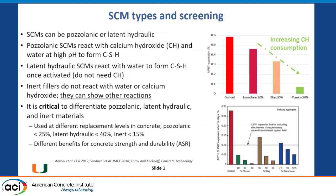Some examples to talk about the link between reactivity and durability: here is a curve which shows that as calcium hydroxide consumption increases, the AMBT expansion reduces. Here is another curve which shows that as materials become more and more pozzolanically reactive, you need less and less of them to mitigate ASR. Obviously, ASR is much more complex than reactivity, so the connection is a little tenuous. But generally speaking, if these materials don't have alkalis, you can assume that a very reactive material will mitigate ASR better than an inert material.